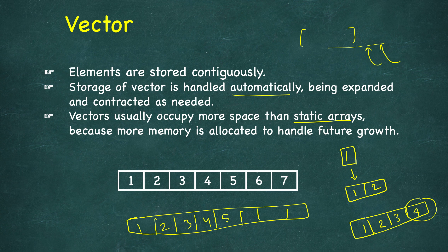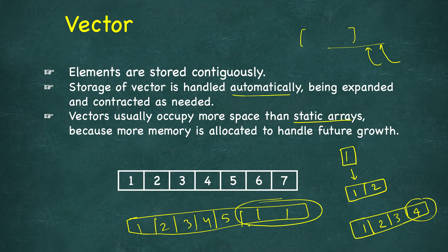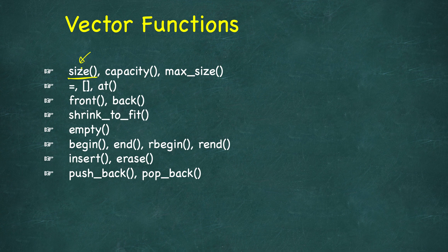All of this is done automatically — you don't need to manage it yourself. Let's look at some important vector functions. The first is size(), which is present in pretty much all STL containers. It gives you the number of elements you have inserted, not the actual capacity. So you'll see a difference: five elements are inserted but capacity is eight, and size() returns five.